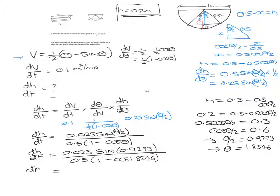And if we put this in the calculator, we find that the rate of change of height, when the height is 0.2 meters, is going to be 0.03 meters per minute.